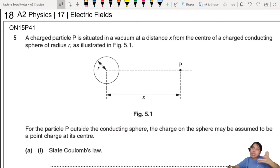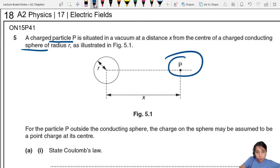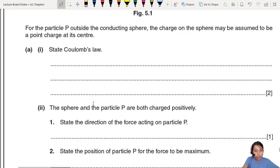This question is a good revision of a lot of the concepts in electric fields that we have looked at so far. ON15P41 Question 5: A charged particle is in a vacuum, so somewhere far away from a conducting sphere. You gotta tell the difference - one is a particle, this guy right here. One is a sphere, this guy right here. And we treat them differently.